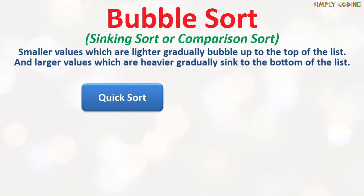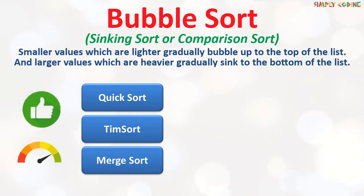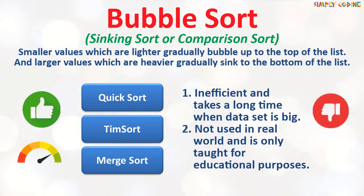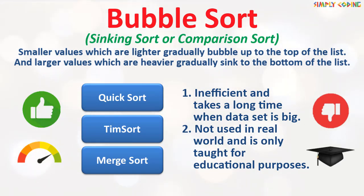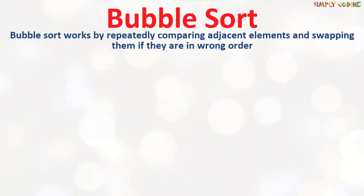There are many other sorting algorithms like quick sort, tim sort, or merge sort which are actually more popular and efficient. Bubble sort is actually very inefficient and takes a long time when the data set is large, so it is not used in the real world and is only taught for educational purposes. Bubble sort works by repeatedly comparing adjacent elements and swapping them if they are in the wrong order.